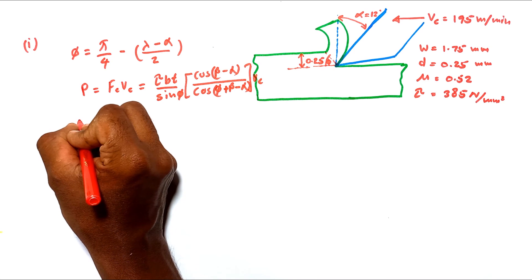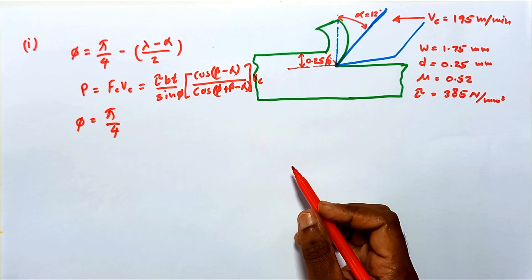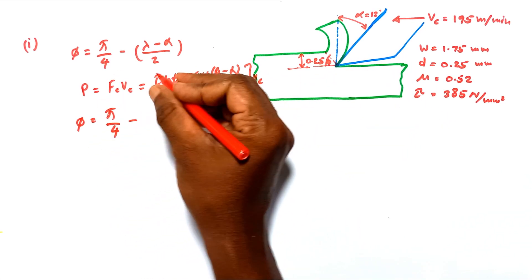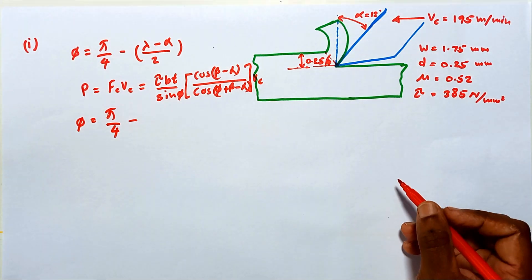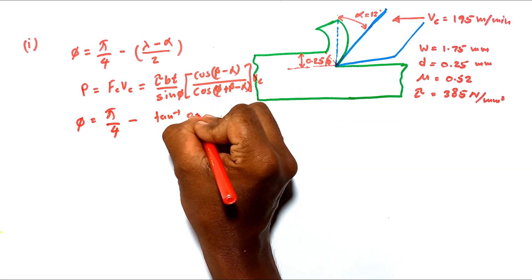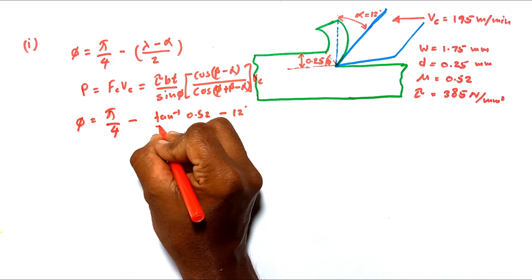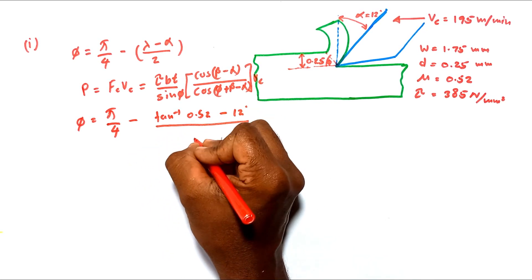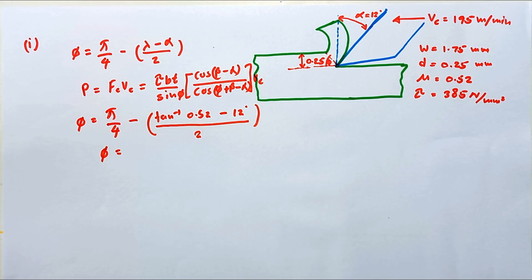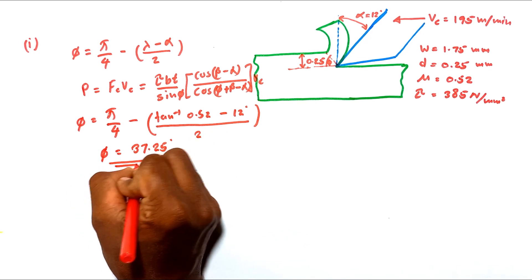This is the equation we are going to substitute the values into — phi divided by 4 — because shearing takes place where energy required for shearing is minimized. Lambda, the friction angle, equals tan inverse of mu. Mu is given as 0.52. Alpha is 12 degrees, divided by 2. So the shear plane angle phi equals 37.25 degrees.